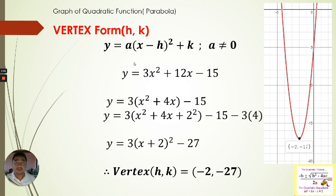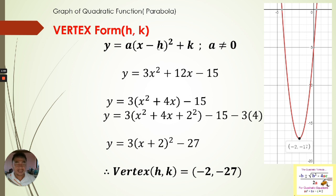As you can see in our first slide, the vertex form is y equals a times (x minus h) squared plus k, where a must not be equal to zero. The vertex is (h, k). If we see (x minus h), then h is positive. If we see (x plus h), then h is negative. Similarly, k takes the sign shown in the equation.